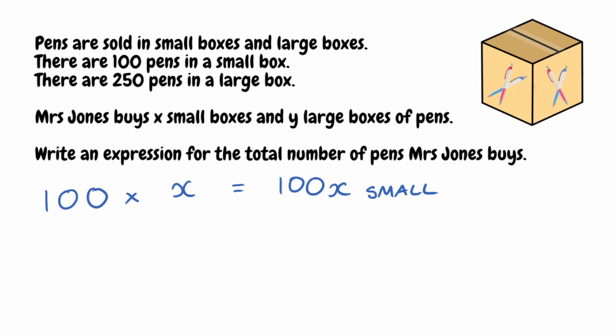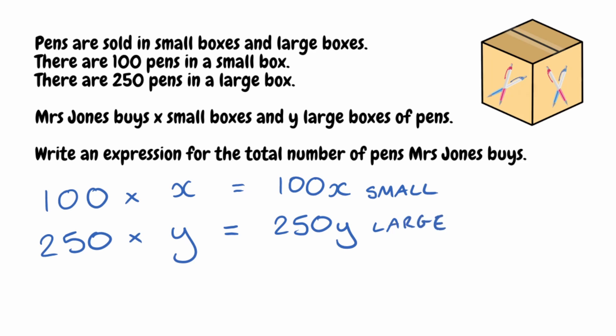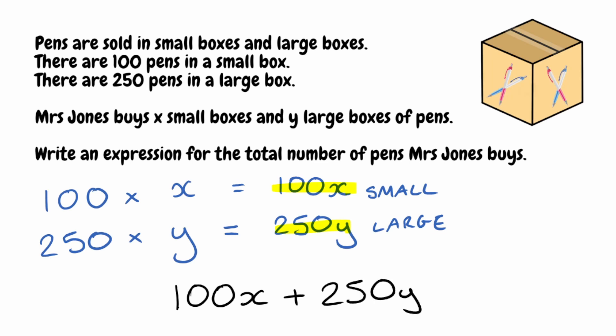Then for the large boxes, we take the number of pens in a large box, which is 250, and multiply by the number of large boxes she buys, which is y. So 250 times y gives us 250y. To find the total number of pens, we add these two terms together: 100x from the small boxes plus 250y from the large boxes. So our final answer is 100x plus 250y.